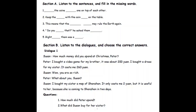How much money did you spend at Christmas, Peter? I bought a video game for my brother, and it was about 200 yuan. I bought a dress for my sister; it costs me 260 yuan. Wow, you are so rich. What about you, Susan? I bought my sister a map of Shenzhen. It only cost me two yuan, but it is useful to her because she is coming to Shenzhen in two days.